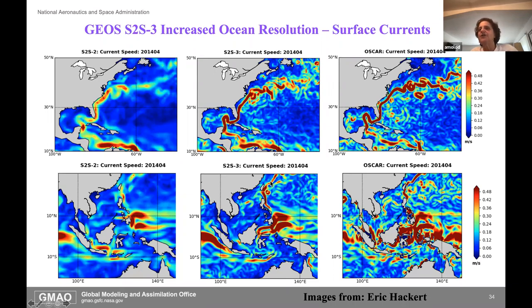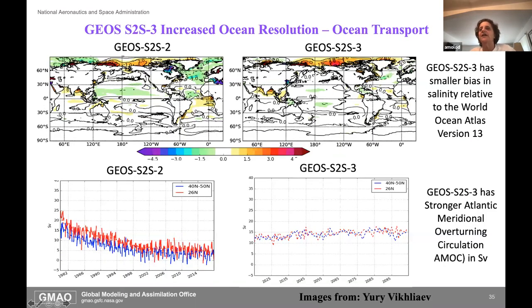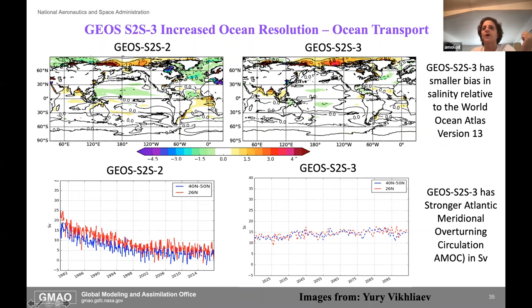At the bottom you're getting the eddies and the Kuroshio that start to resemble observations—we're not resolving eddies per se, but it's starting to look more like what we think it should look like. Also, related to better-resolved throughflows, the salinity is looking really nice. Salinity biases we were getting on both sides of the Indonesian throughflow are gone, and it's helping ocean transport as well.